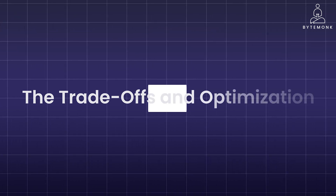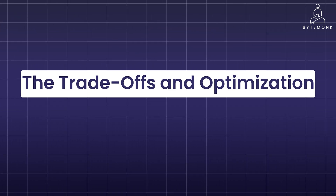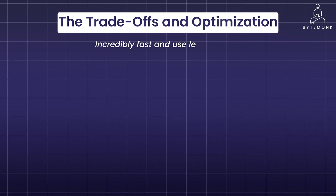Bloom filters offer a fantastic trade-off: they are incredibly fast and use less memory compared to traditional search methods, making them perfect for massive datasets. However, the chance of false positives increases as the filter fills up with more items — just like a crowded room with more people using the same light switch. So, how do we optimize Bloom filters?